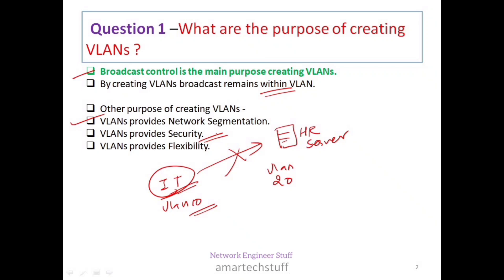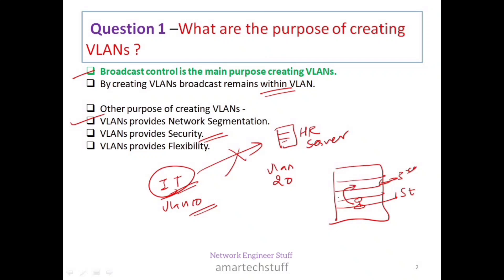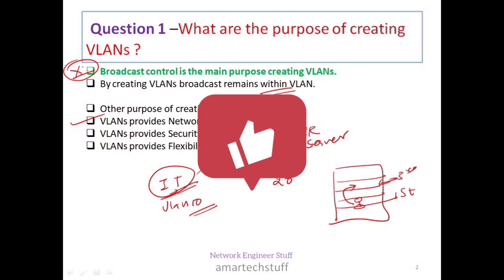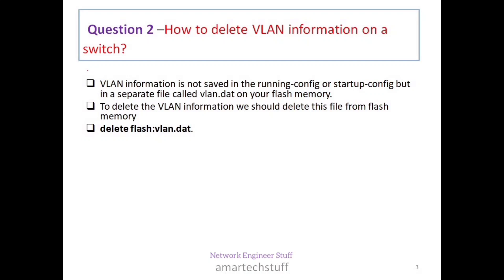VLANs also provide flexibility. When we say flexibility, that means a user can easily move across a physical location and still remain in the same VLAN. For example, in a multi-floor office building, a user on the first floor can move to the third floor and still remain in the same VLAN. The main purpose of creating a VLAN is broadcast control.